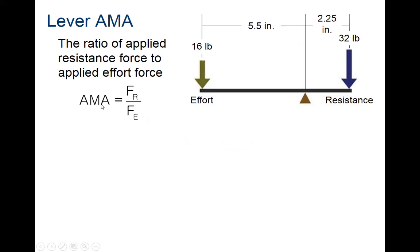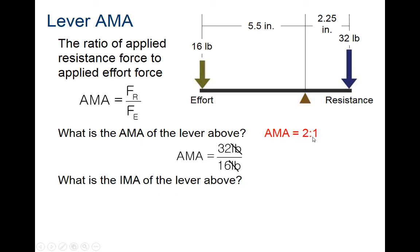The actual mechanical advantage, which includes friction—our resistance force is 32 pounds, and our effort force is 16 pounds. When we calculate the actual mechanical advantage, it's 32 divided by 16, which gives us a mechanical advantage of 2.